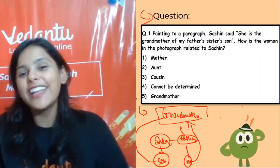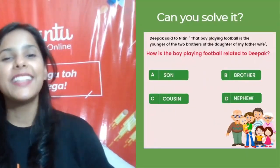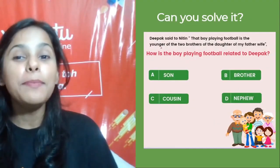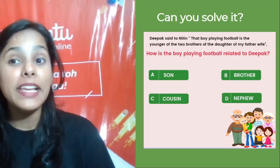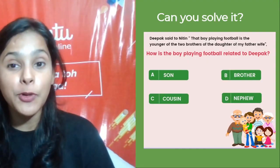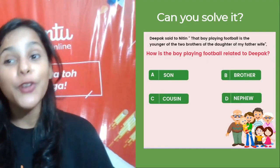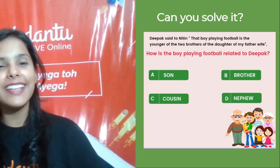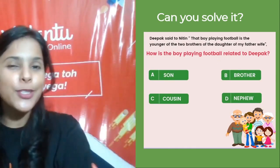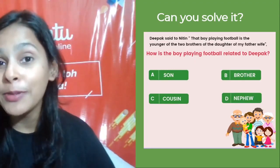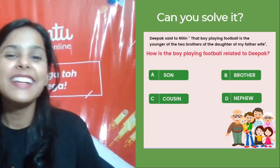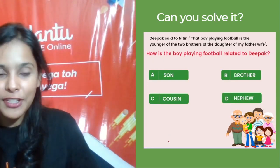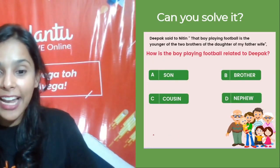Next question: Deepak said to Nathan, 'The boy playing football is the younger of two brothers and the son of my father's wife.' Pause the video and try to solve it using the method shown.